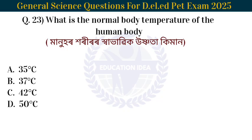Next question: What is the normal body temperature of the human body? The normal body temperature is 37 degrees Celsius.